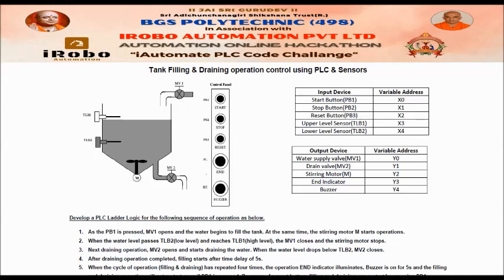One filling and draining sequence constitutes one cycle, and this cycle should be repeated 4 times. After 4 cycles of filling and draining, the end indicator (Y3 output) turns on continuously. The buzzer is on for 5 seconds only, then turns off. The filling and draining operation will not restart even if PB1 is pressed again. Only by pressing the reset button PB3 can the filling and draining restart.